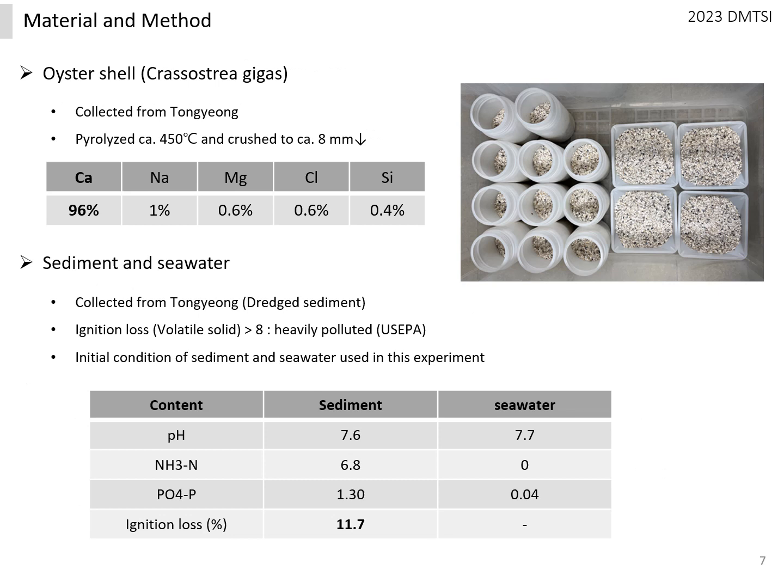The oyster shells used in the experiment were collected from Tongyeong — a product sold for fertilizer and feed — and the coating layer was completely removed. Oyster shells were pre-treated at 450 degrees Celsius and were approximately 8 millimeters in size.